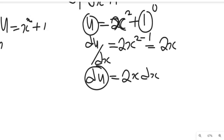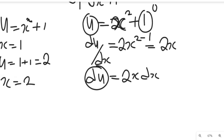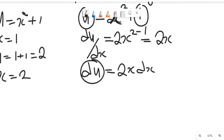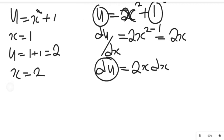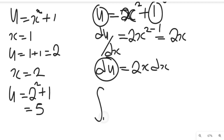We are going to transform the limits using u equals x squared plus 1. When x equals 1 (the lower limit), u equals 1 squared plus 1, which equals 2. When x equals 2 (the upper limit), u equals 2 squared plus 1, which equals 4 plus 1, equals 5. So our new limits of integration will be u equals 2 as the lower limit and u equals 5 as the upper limit.